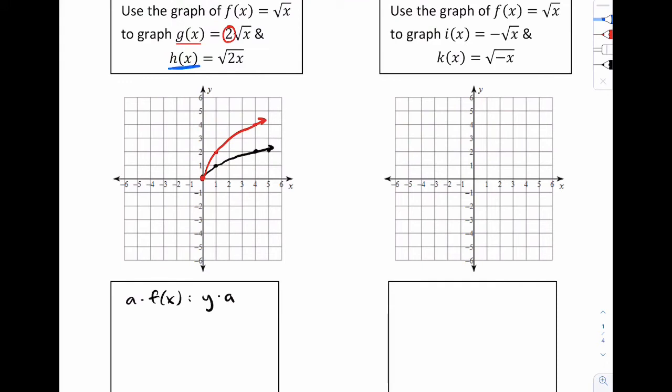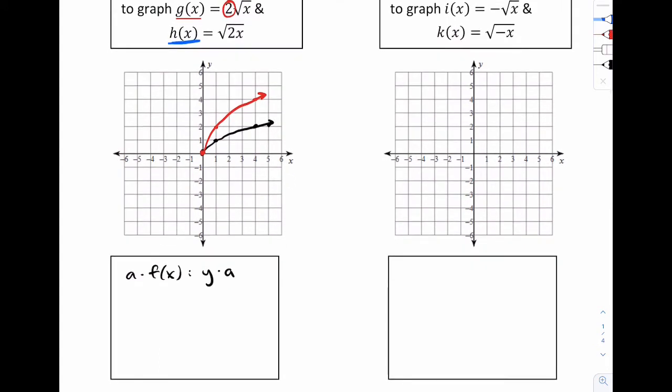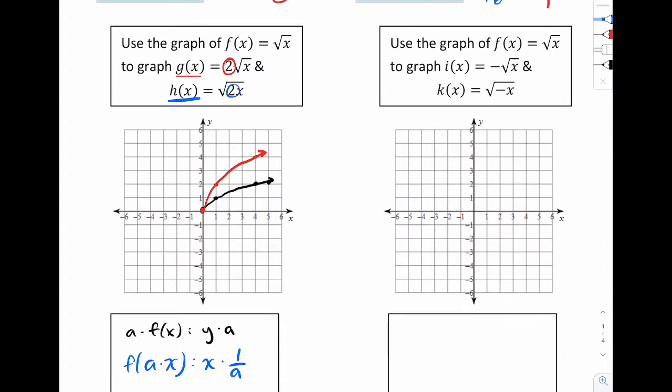Now for h(x), a little bit different. See how there's a root on the outside and 2 is on the inside? In this situation, if a times x like this, you actually multiply x by the reciprocal of what's on the inside. Which means for this one, you actually do x times 1 over 2. Whereas for this one, we did y times 2. And I'll show you why.